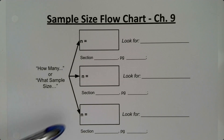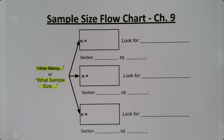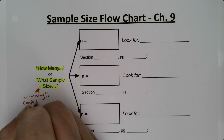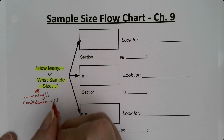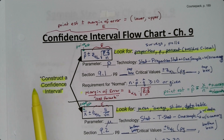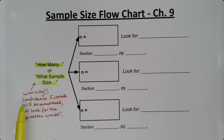Just as with confidence intervals, we have multiple formulas for sample size, and the key will be to know which one to use. How can you tell it's a sample size question versus a confidence interval question? Look for the question words 'how many' or 'what sample size.' Be warned: confidence will be mentioned in both types. If the problem says 'construct this interval,' it's a confidence interval question. If it says 'how many do I need in order to construct the confidence interval,' that's a sample size question.